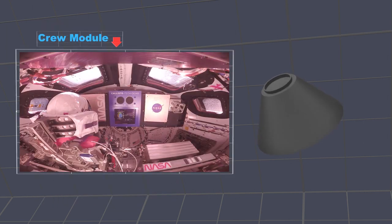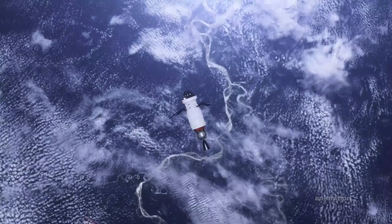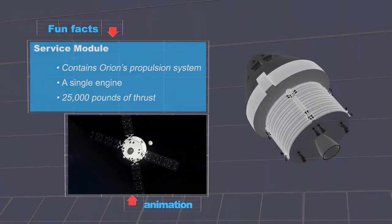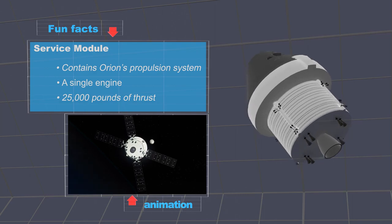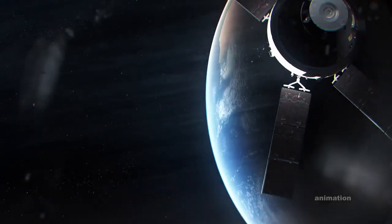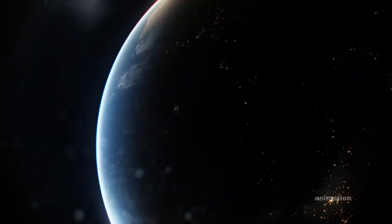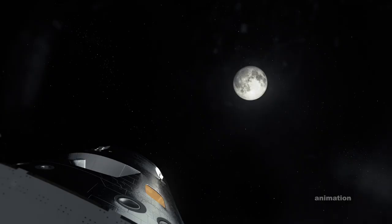Artemis 1 is an uncrewed test, meaning no humans are on board this time. The service module contains Orion's propulsion system, a single engine that will provide the spacecraft almost 25,000 pounds of thrust as it sends the spacecraft to the moon.